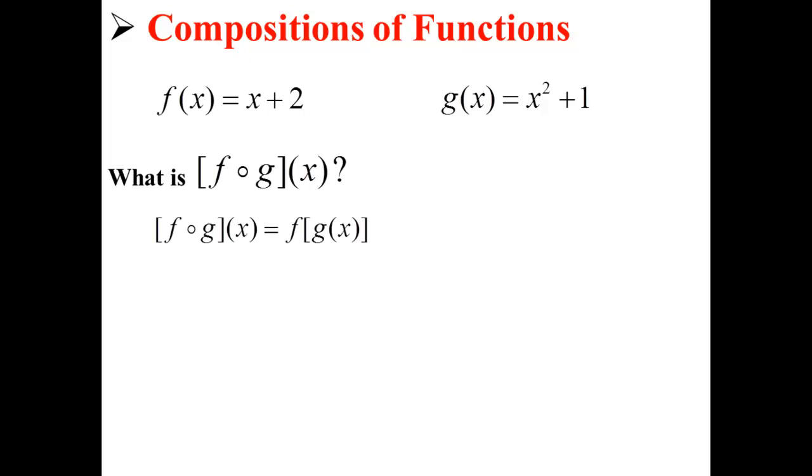Here, f of g of x is rewritten as f of g of x. f of g of x is now equal to f of x squared plus 1. So the f of g of x is equal to x squared plus 1 plus 2, which simplifies further to x squared plus 3.